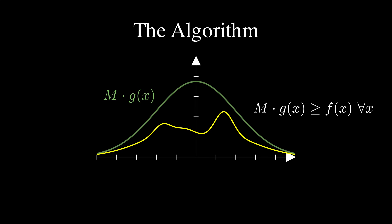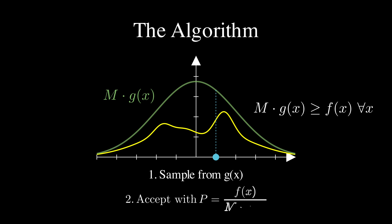Once we have this envelope set up, the algorithm is beautifully simple and consists of just two steps that we repeat. First, we generate a sample x from our proposal distribution g, which is easy because we chose g specifically to be simple to sample from. Second, we accept this sample with probability equal to f(x) divided by m times g(x), and if we reject it, we just try again with a new sample.